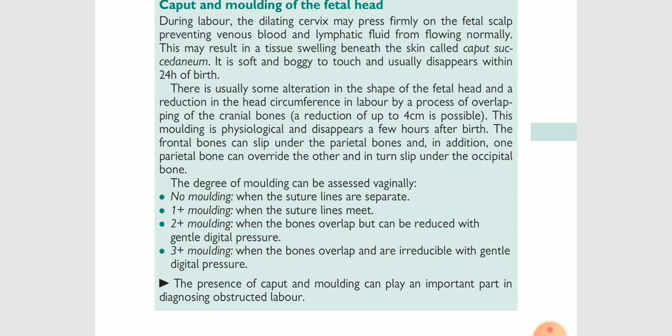There are degrees of molding which can be assessed vaginally. No molding is when the sutures lie separately — if the sutures are separate from each other, there is no molding. First degree molding is when the sutures meet together, meaning the sutures come closer to each other and meet.